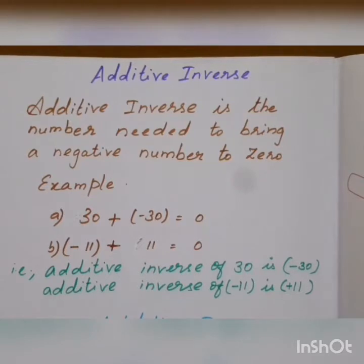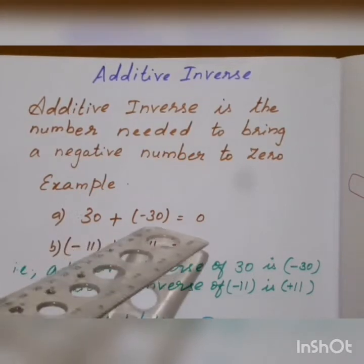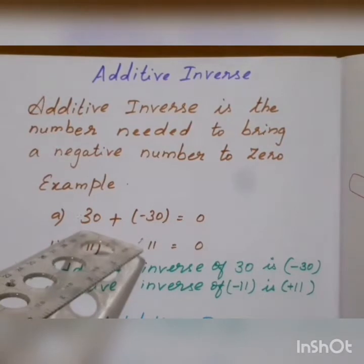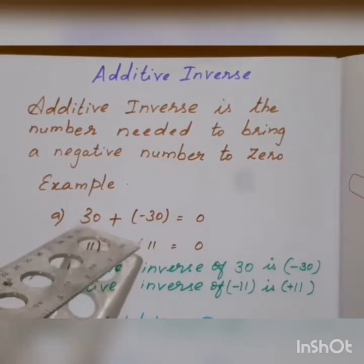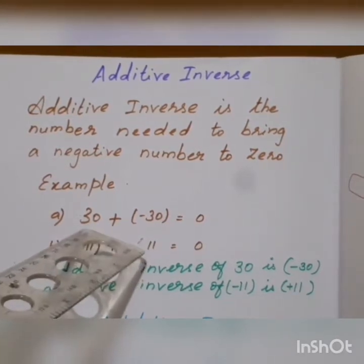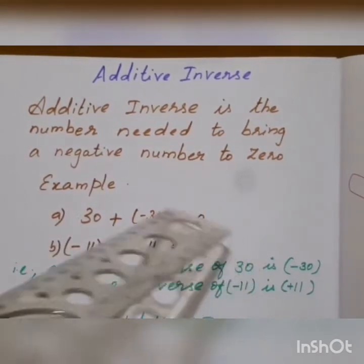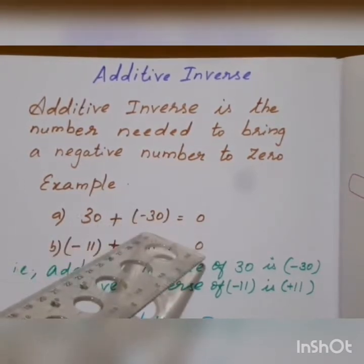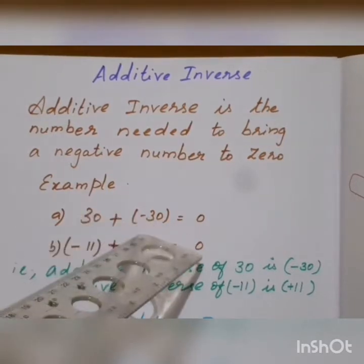Additive Inverse is the number needed to bring a negative number to 0. A number added to a negative number becomes 0. Take any positive number — in which number to be added so it becomes 0? That number is a negative number.